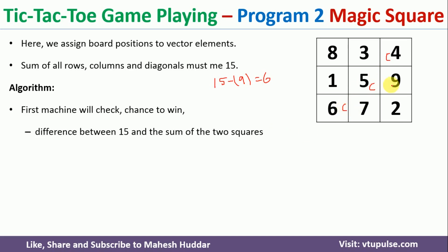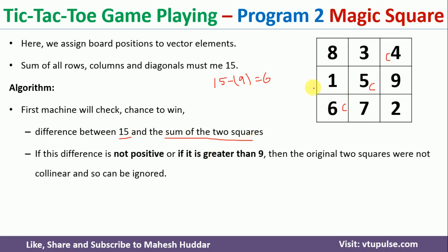Whenever the computer wants to check whether it is winning, it takes the difference between 15 and the sum of its two occupied squares. If that difference is not positive or is greater than 9, the computer cannot win. If it is a positive number less than or equal to 9, it checks whether that square is empty. In this case, 6 is positive, less than 9, and empty, so C is winning.